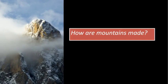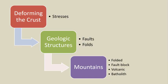How are mountains made? In order to answer this question, let's consider a chain of events that can result in making a mountain. Deforming the crust means changing the shape of a body of rock by bending and/or breaking it. This happens when stresses are applied to a rock, which typically happens along or near plate boundaries. Over time, stresses deform the crust into geologic structures such as faults and folds.